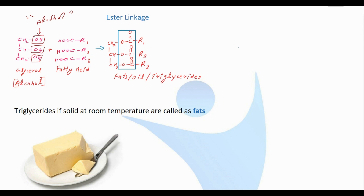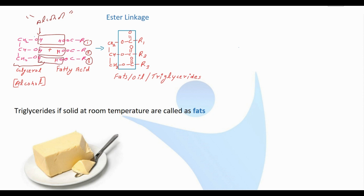Glycerol contains three hydroxyl groups, which are also called alcoholic groups. We can also obtain the fatty acids — the fatty acids are long-chain acids. We combine the fatty acids to form fats, oils, and triglycerides. Taking all three hydroxyl groups, the OH part from the acid and the hydrogen part from the glycerol combine, releasing three molecules of water, to form a fat, oil, or triglyceride.